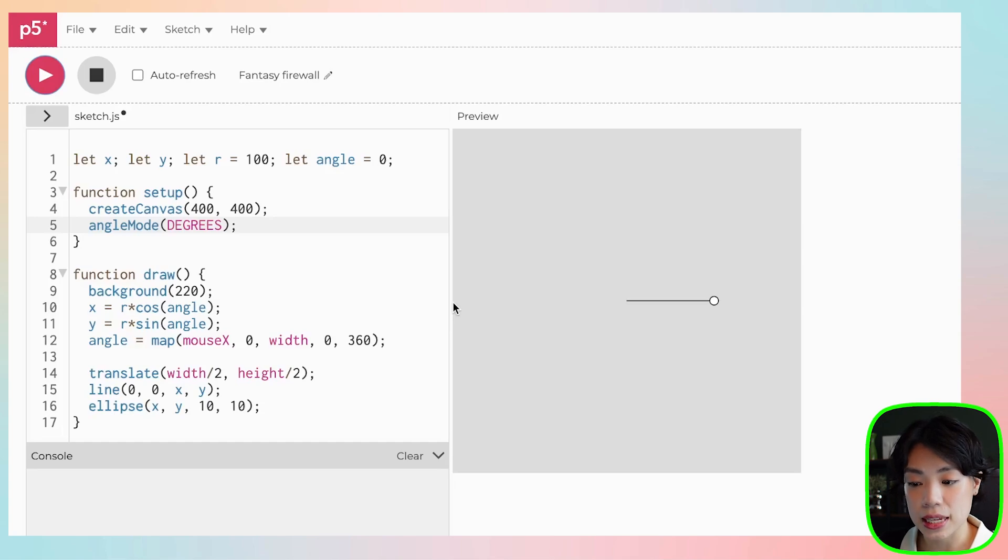The second thing that I wanted you to notice is that when x is at its peak, so at negative 100 or positive 100, y equals to 0. And vice versa. When y is at negative 100 or positive 100, x is at 0. So the values alternate.